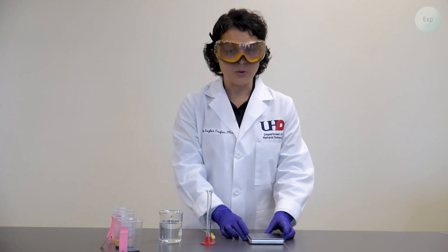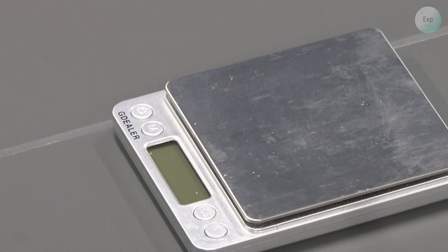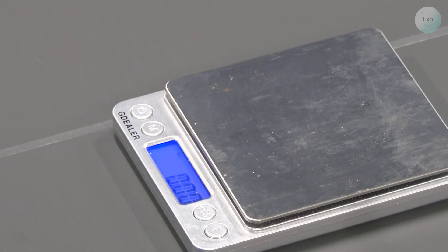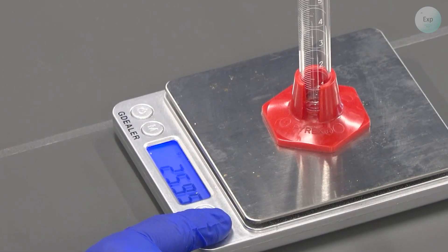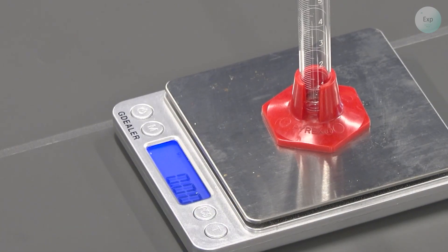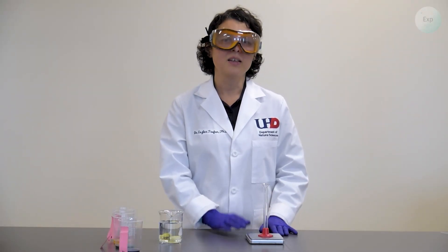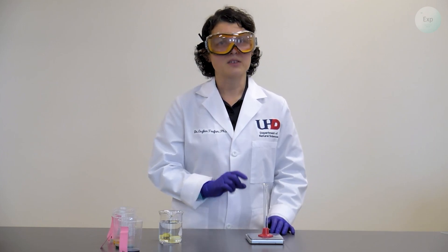The first thing that we need to record for density is going to be mass. To record the mass, we're going to turn on our scale. When it shows 0.00, we will place our graduated cylinder on top. We're going to tare, and then we're going to transfer a small amount of water into the graduated cylinder. Because we tared it, it means that whatever we add to it is going to be just the mass of the water.